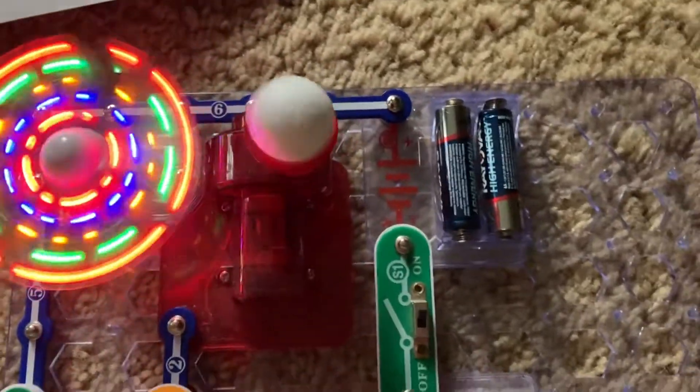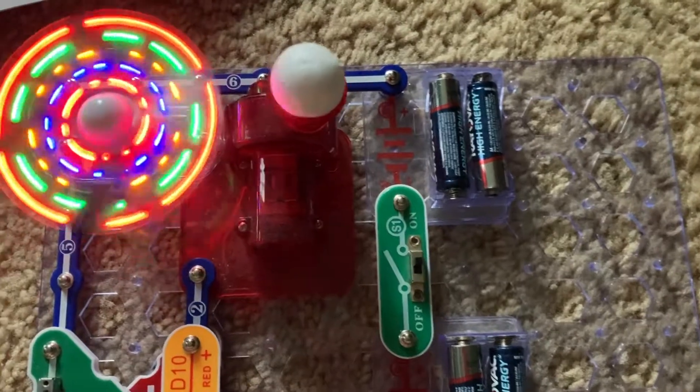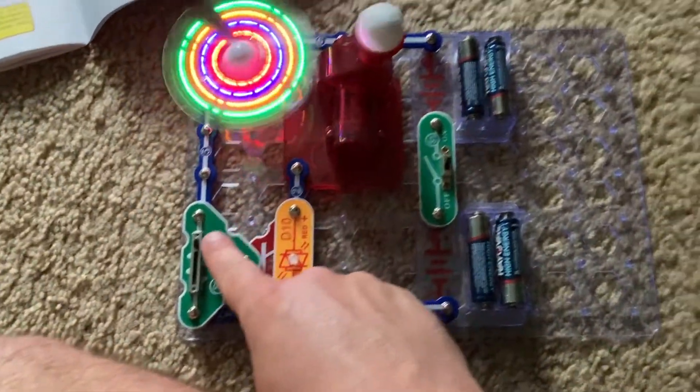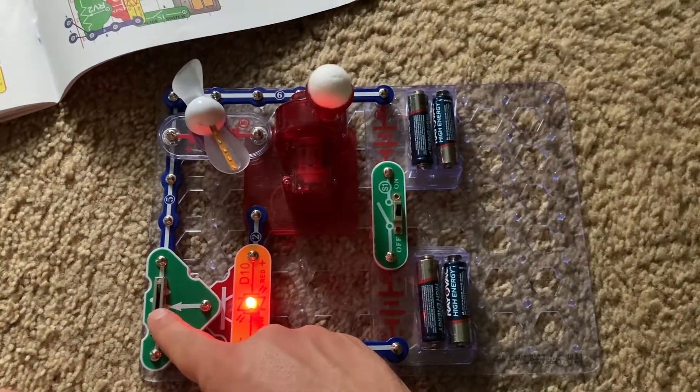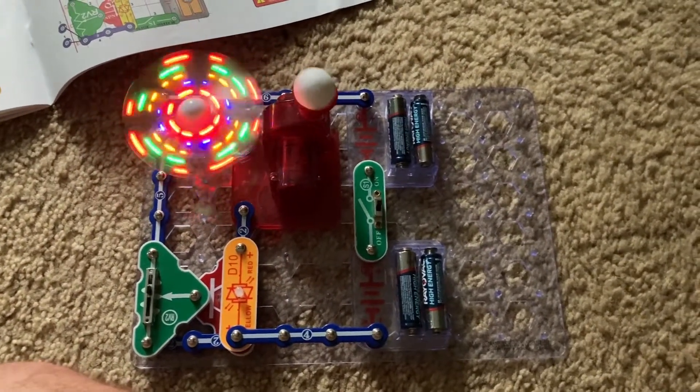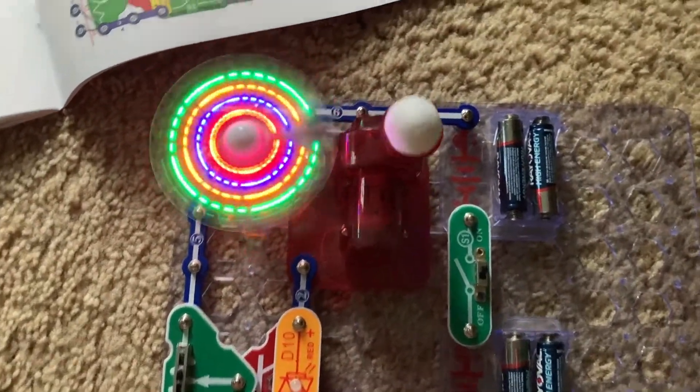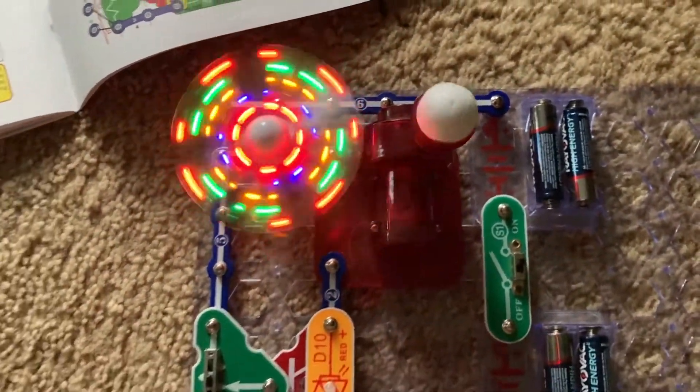But you can see the ball dancing on the spout of the air fountain. It's best to do this in a dimly lit area because you can see the effects of the light motor LEDs better.